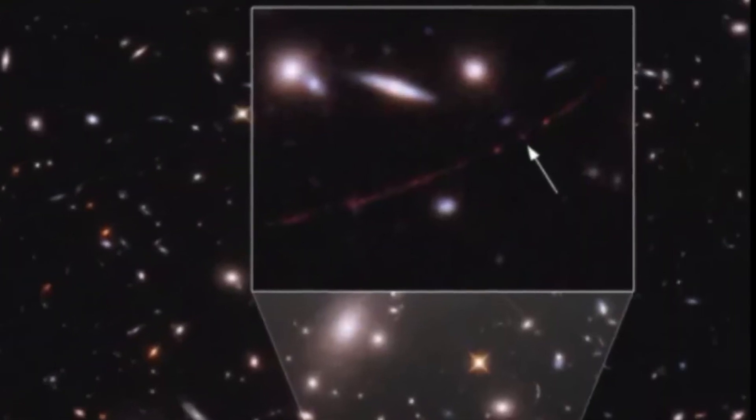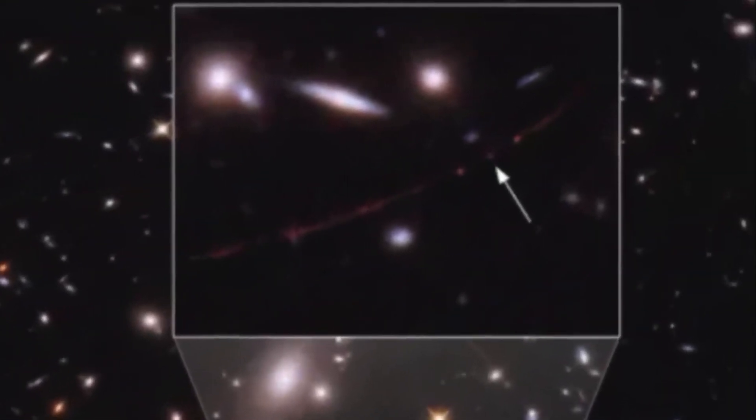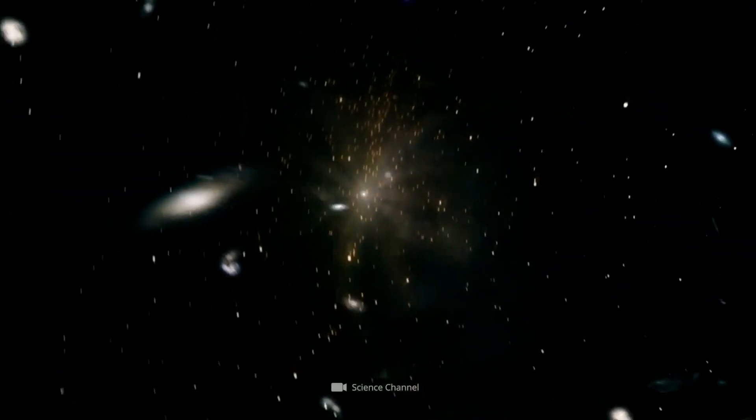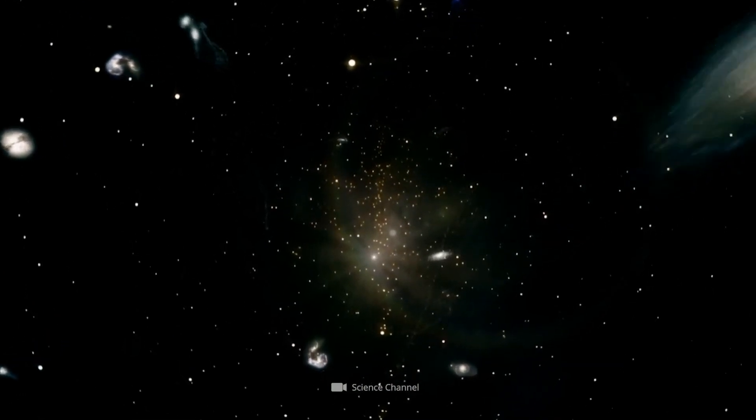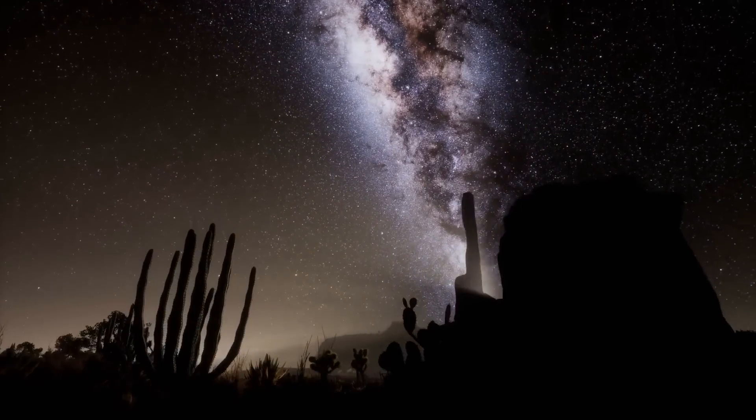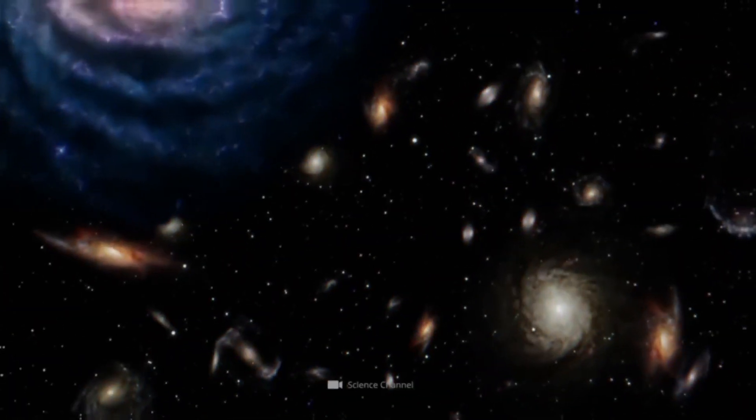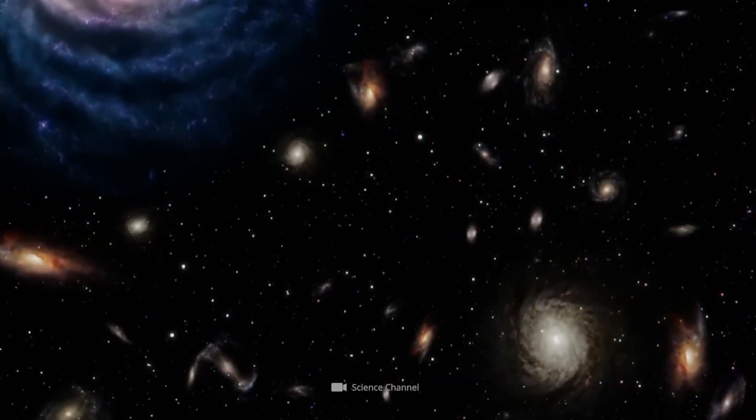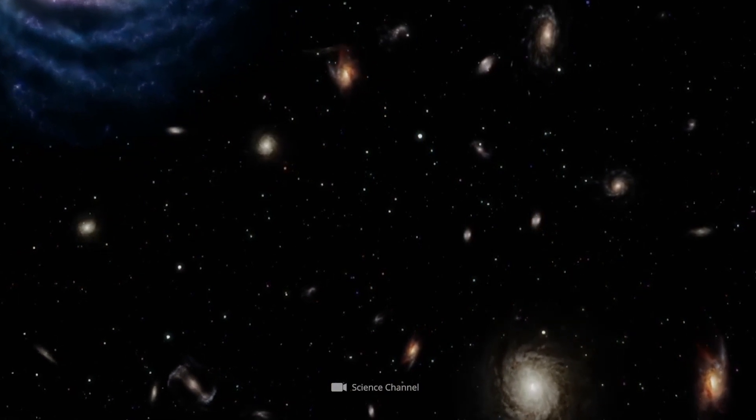Some scientists believe the Big Bang suggests the cosmos is expanding and an optical illusion exists in space. Galaxies and other cosmic objects don't shrink with distance. After a certain point, they should get bigger as their light leaves them, yet James Webb's photos show them getting smaller.